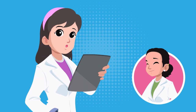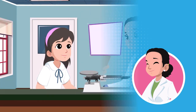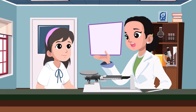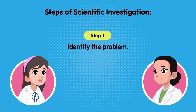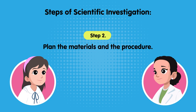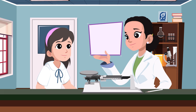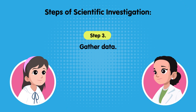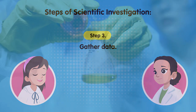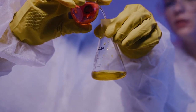Ellie shares that she wants to work in a laboratory to do experiments. Teacher Anne asks what scientists do in a lab. Ellie explains: scientists follow a step-by-step procedure — beginning with identifying the problem, then planning the materials and steps needed to solve it, and then performing the experiment to gather data, using measuring tools to be accurate with their observations.